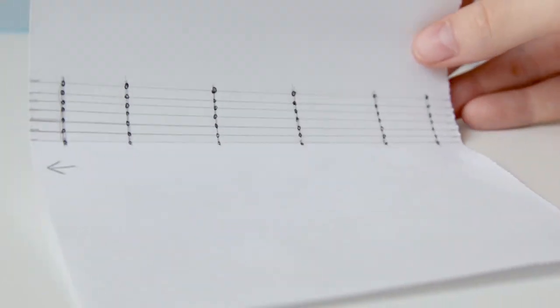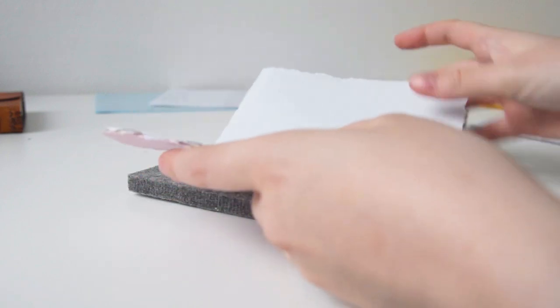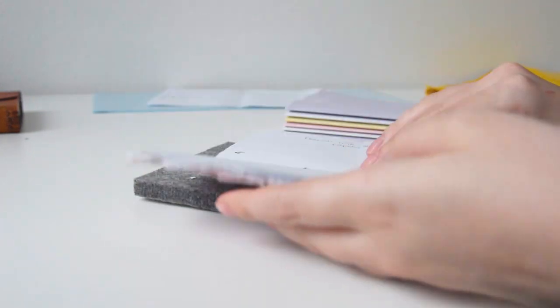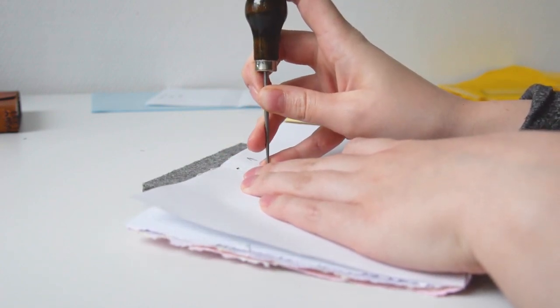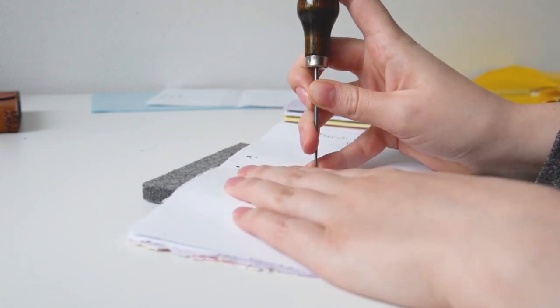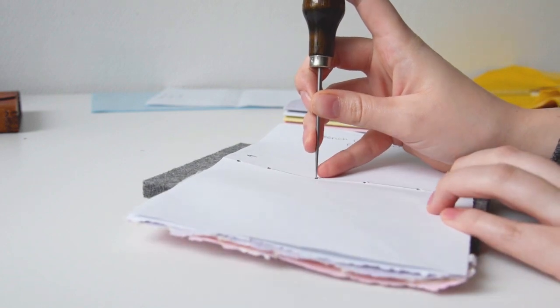And now you have finished your templates, so you can go ahead and start poking those holes. Take your first signature and open it in the middle. Align your template with the signature, making sure the creases are neatly against each other. Then place them on your mat or sponge or whatever you're using, make sure not to move them off of each other, and poke the holes.